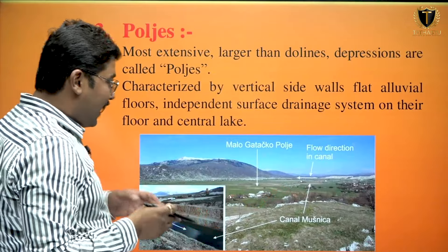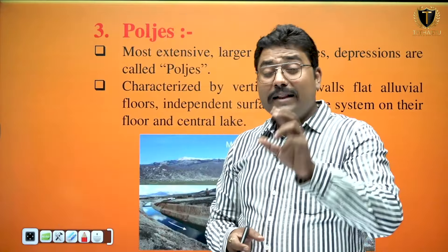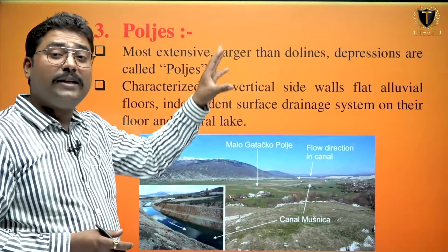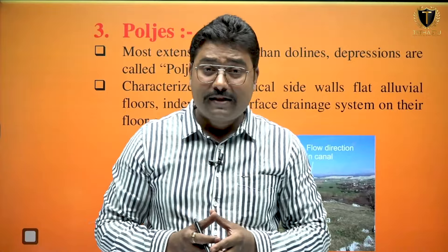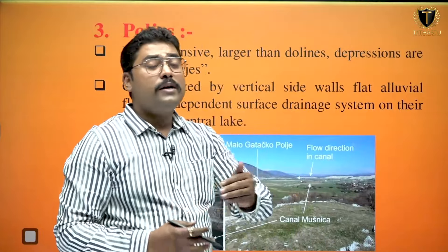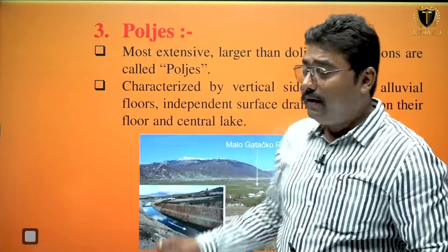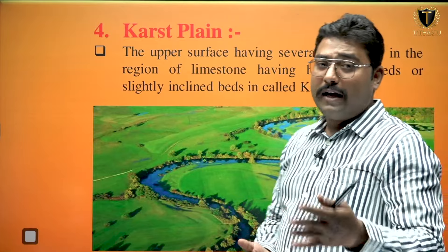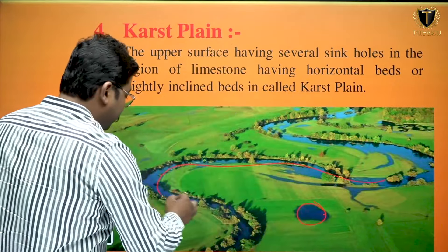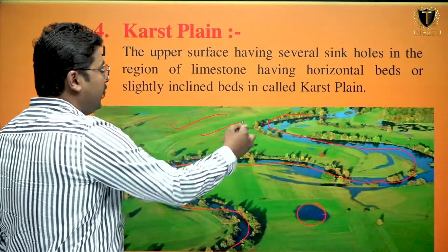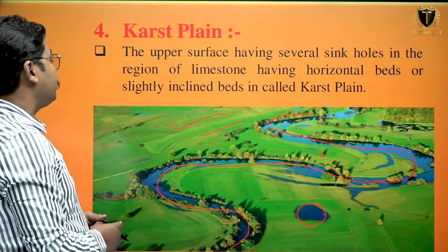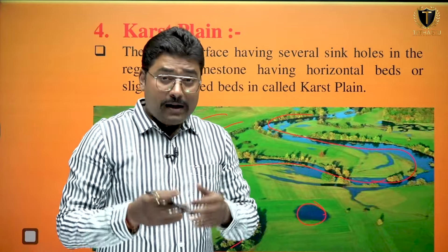Now, you might be thinking UPSC will ask you definitions — no, UPSC will give you these definitions and characteristics in the karst topography question, and on the basis of those characteristics they will ask you which type of feature this is. After poljes you will find the karst plain — an extensive plain area with many sinkholes, a separate drainage system. The upper surface having several sinkholes in the region of limestone having horizontal or slightly inclined beds is called the karst plain.